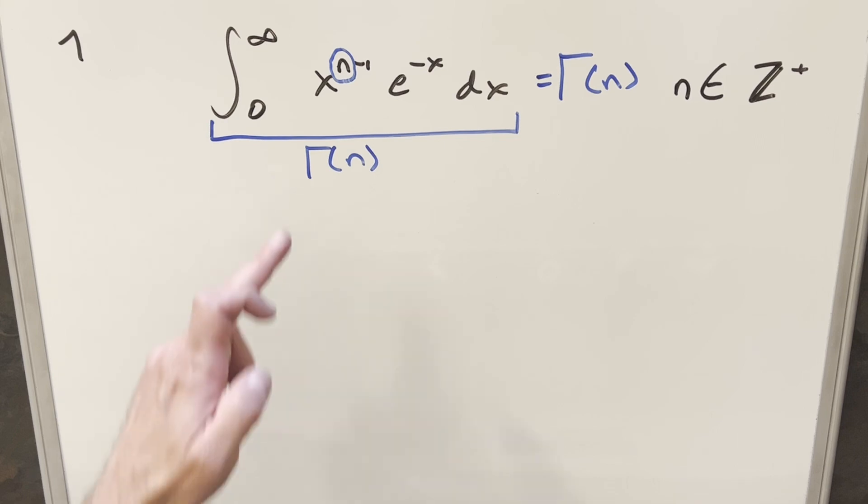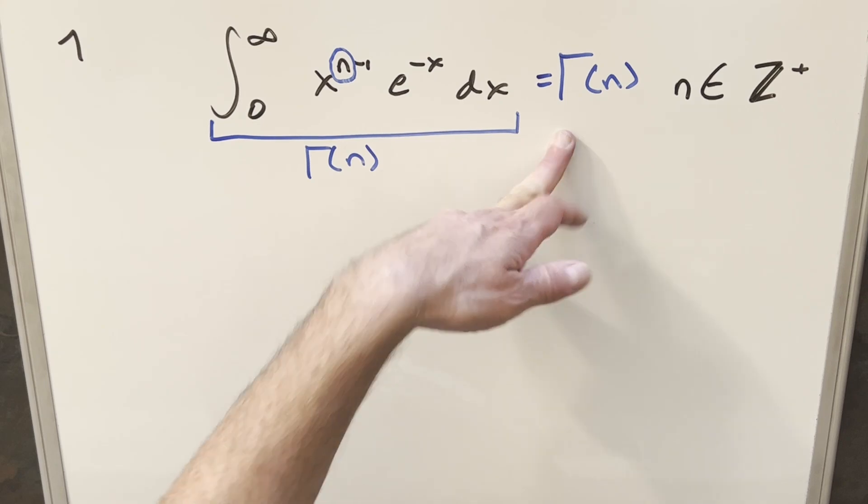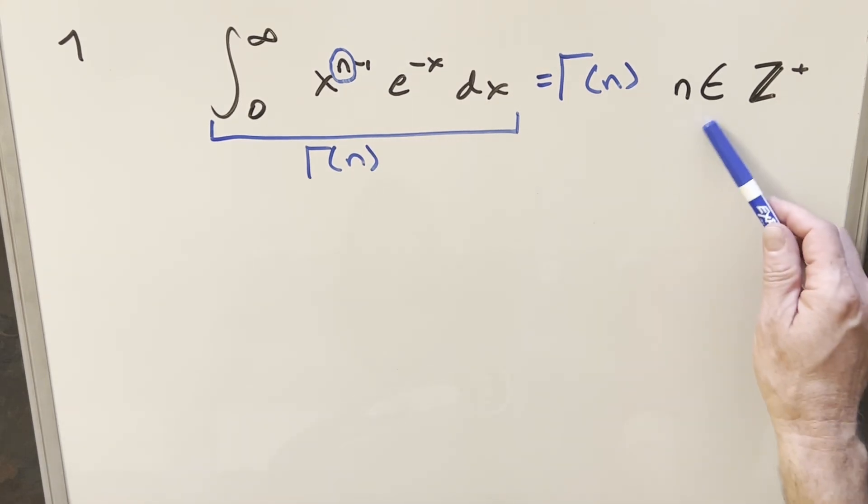So what we can do instead is try to derive this formula using integration by parts, take a longer way, and eventually get back to this, hopefully if it works alright. And before we can start with that, one thing I should mention is we're given that n is a member of the positive integers.